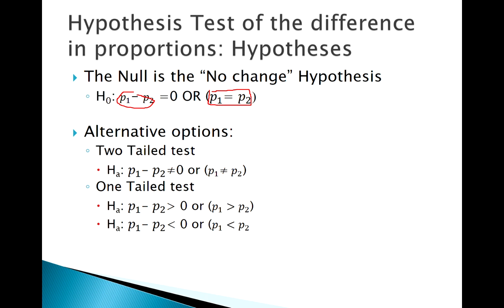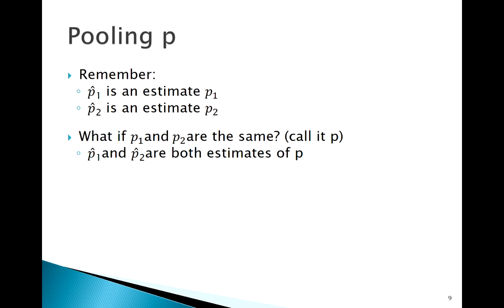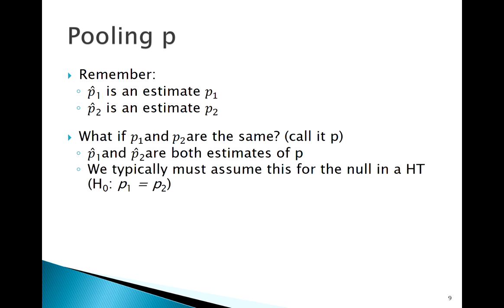For a confidence interval, I have no idea what the parameters are and I want to estimate them — that's why I plug in p1-hat and p2-hat. A hypothesis test is different: we have a claim in mind and we assume the null is true. The null we're assuming is that p1 and p2 are equal to each other. p1-hat estimates p1 and p2-hat estimates p2, but if they're the same — call it p — then p1-hat and p2-hat are both estimates of the same proportion p.